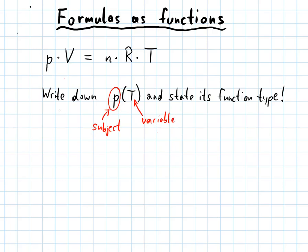Okay, so let's start. The first thing is, as we said, that we have to rearrange the formula in a way that P is the new subject. So we will divide by V and we will end up with P equals N times R times T divided by V. So this is the first element that you rearrange the formula in a way that this letter is the new subject.